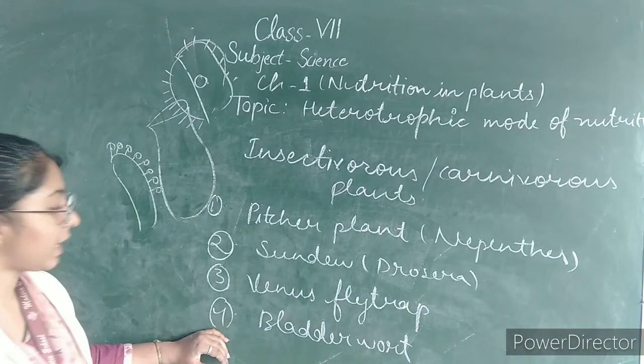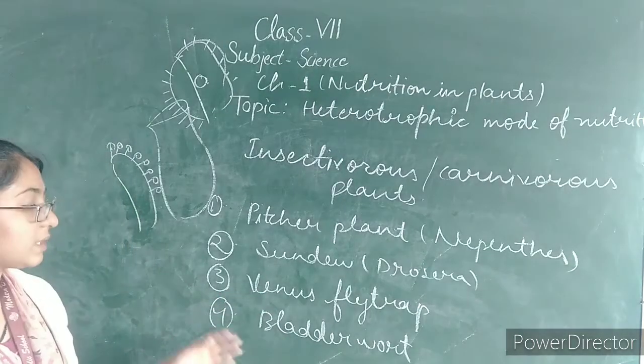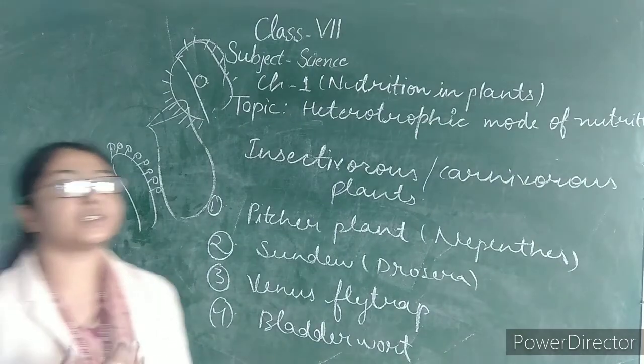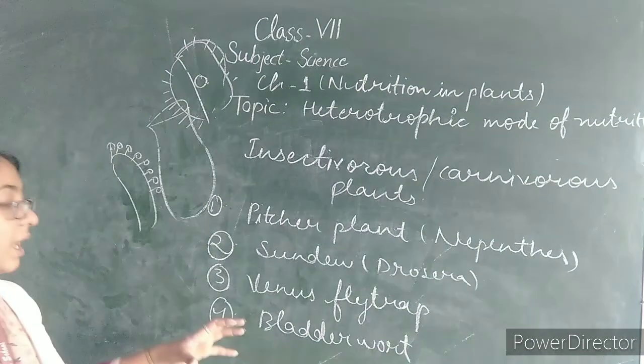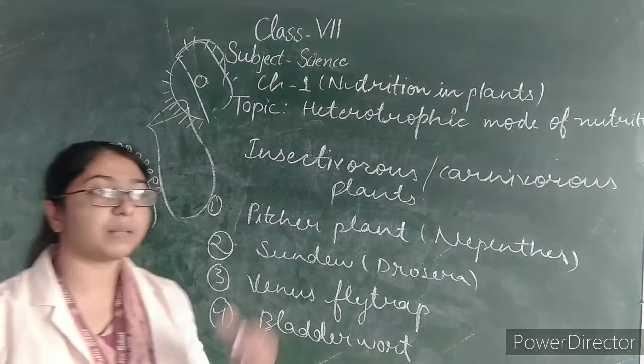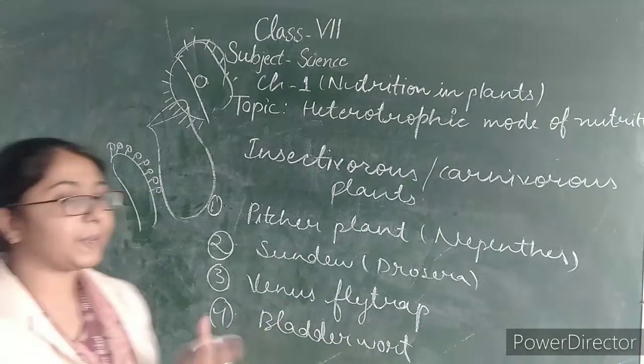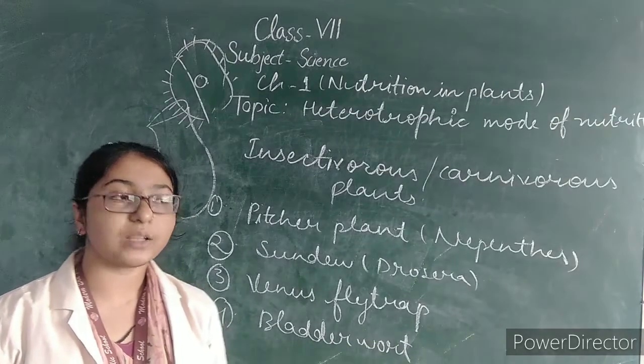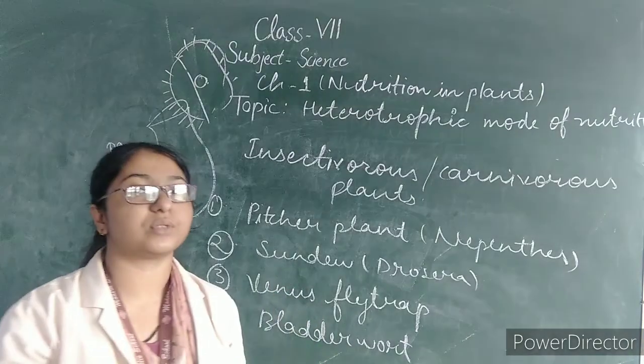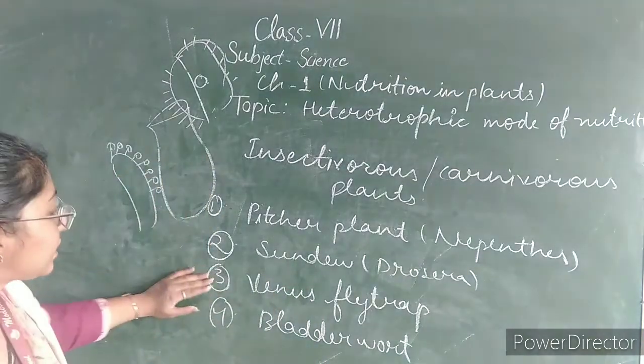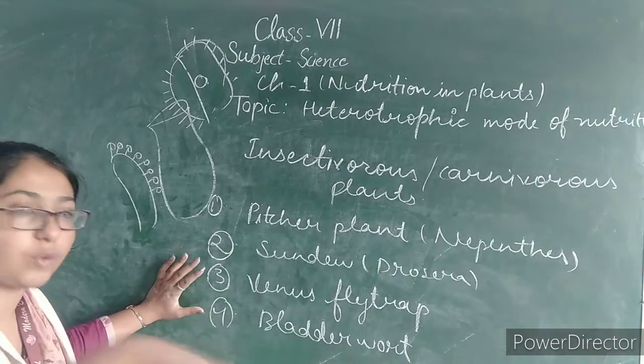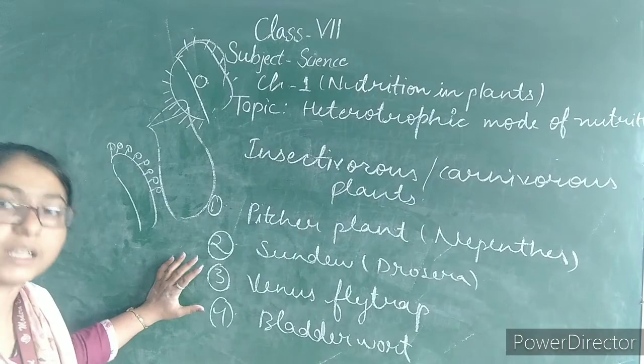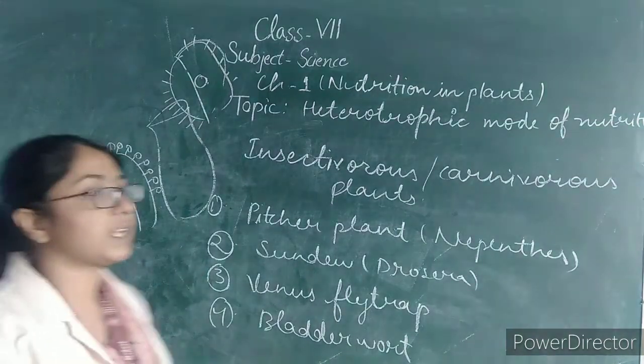Number four is bladderwort. Bladderwort has a trapdoor mechanism. One-way valve means when an insect enters the bladder, it can come inside but cannot come outside. Once inside, it gets trapped and digested.